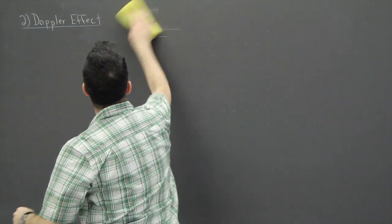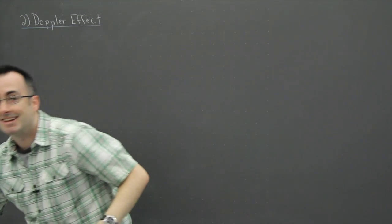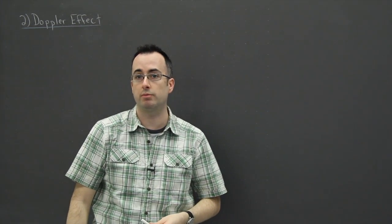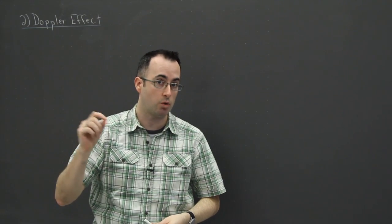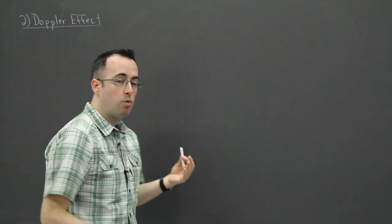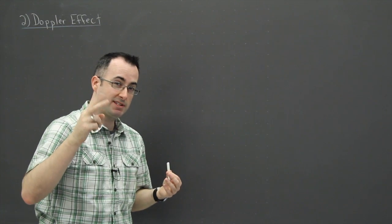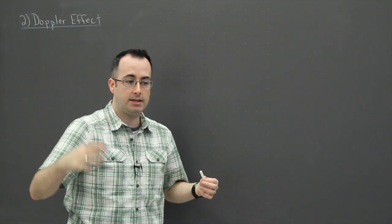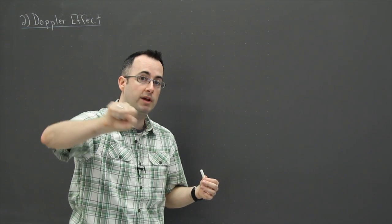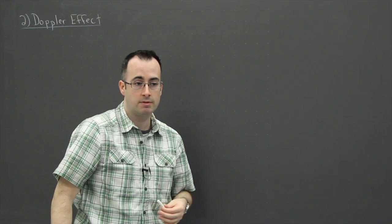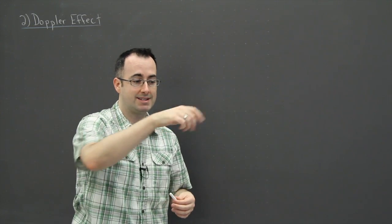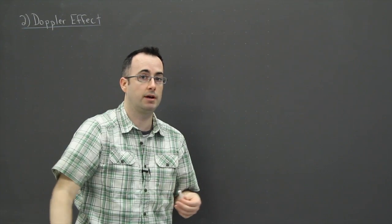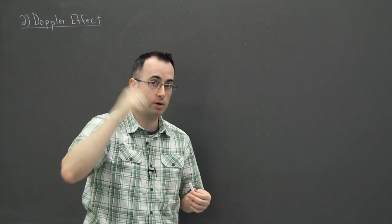I'm going to erase this because it's a horrible diagram, but what I'm going to show you is how we can use this to predict what frequency of sound we're going to hear. There are two different situations: you can have where you're standing still and the source of sound is coming towards or away from you — that's called a moving source — or the source is still and you're running towards or away from it, which also changes the pitch you hear.